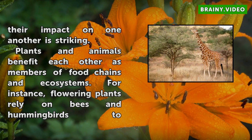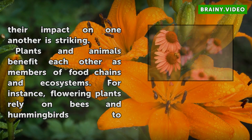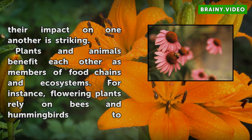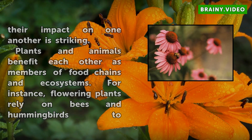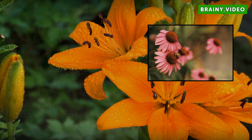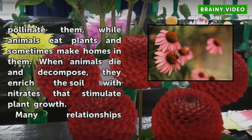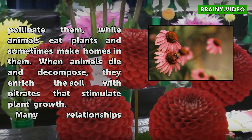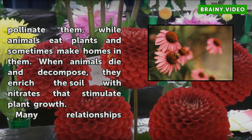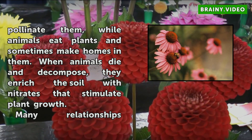Plants and animals benefit each other as members of food chains and ecosystems. For instance, flowering plants rely on bees and hummingbirds to pollinate them, while animals eat plants and sometimes make homes in them. When animals die and decompose, they enrich the soil with nitrates that stimulate plant growth.